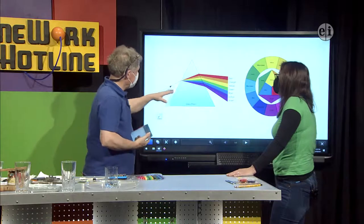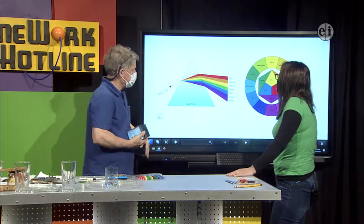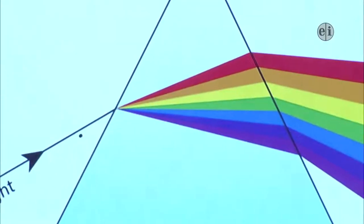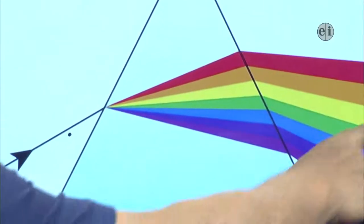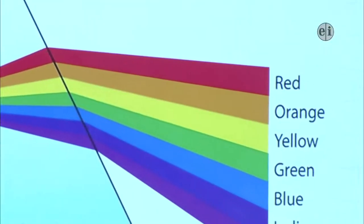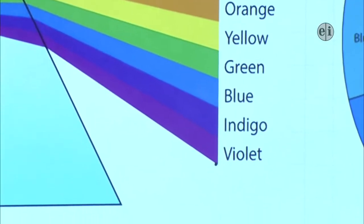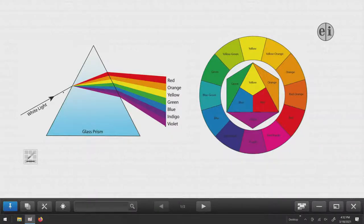So what happens is white light comes in and a prism will break it into its component colors. And the colors are based on the wavelength of how fast the waves are traveling. It's actually the troughs, like waves in the ocean. So red has the biggest wavelengths and violet has the tightest or the smallest wavelengths. And so it's also energy. So red has a lot less energy in it than violet. And then ultraviolet is the stuff that burns our skin. That's why they call it ultraviolet. And then infrared is up here.